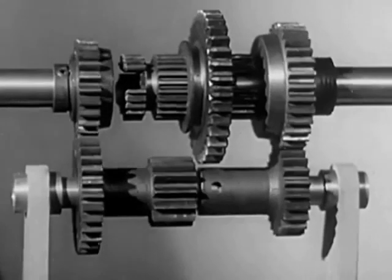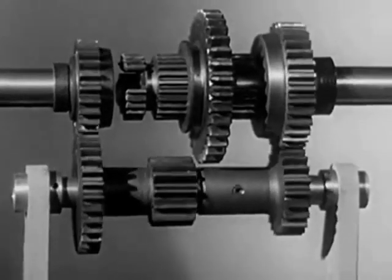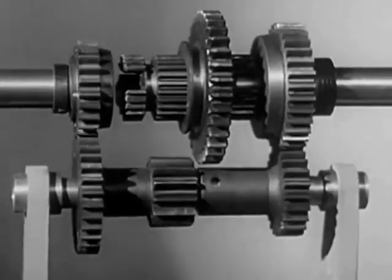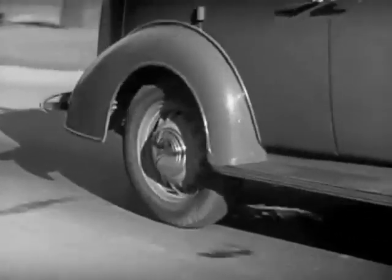We are now in neutral. The gears that are always in mesh are turning over with the engine, but the shaft to the rear wheels is standing still. A 3,000-pound automobile takes a lot of force to start.